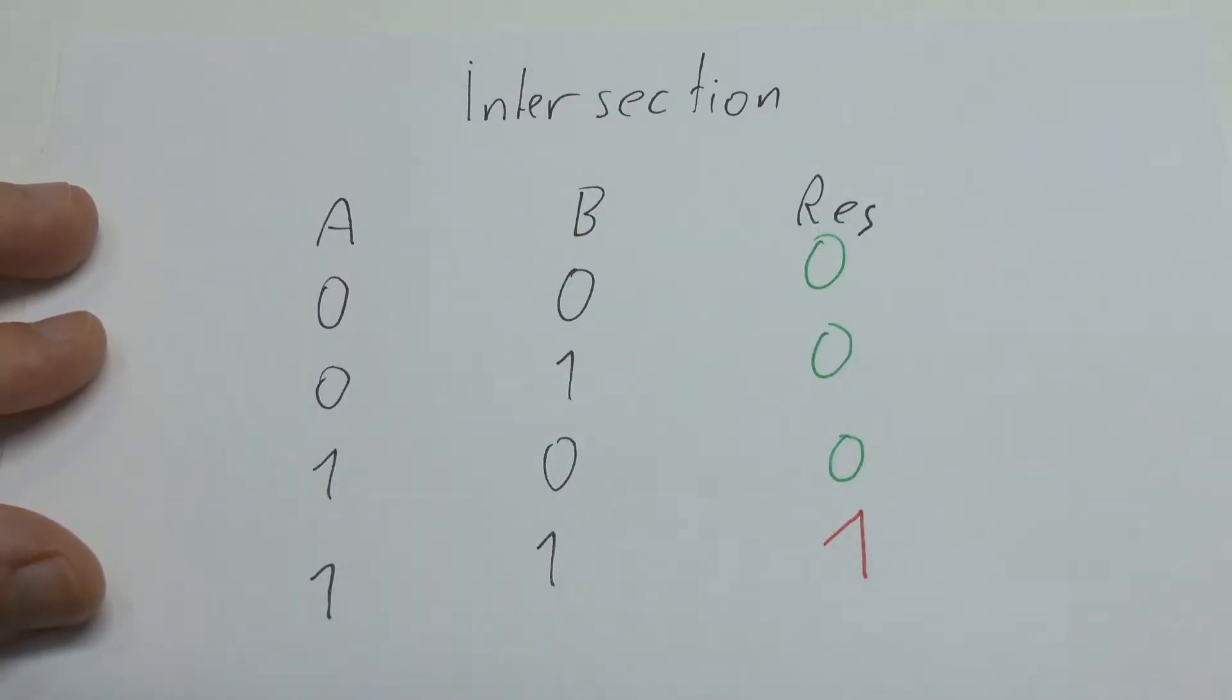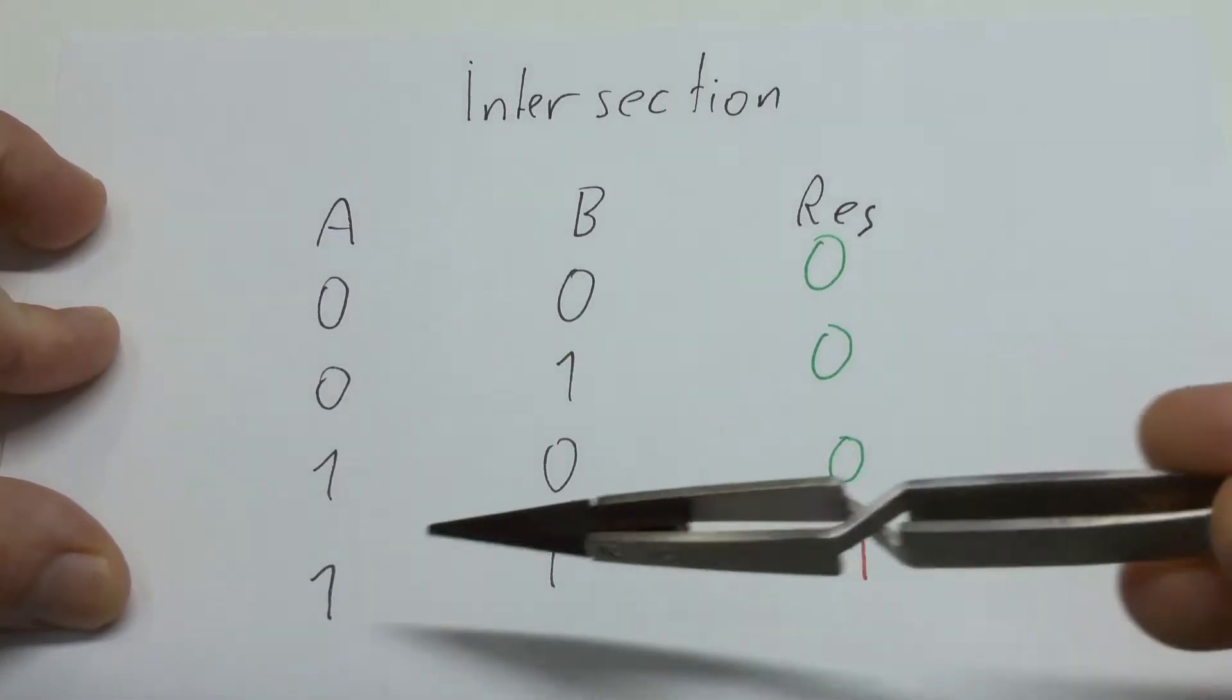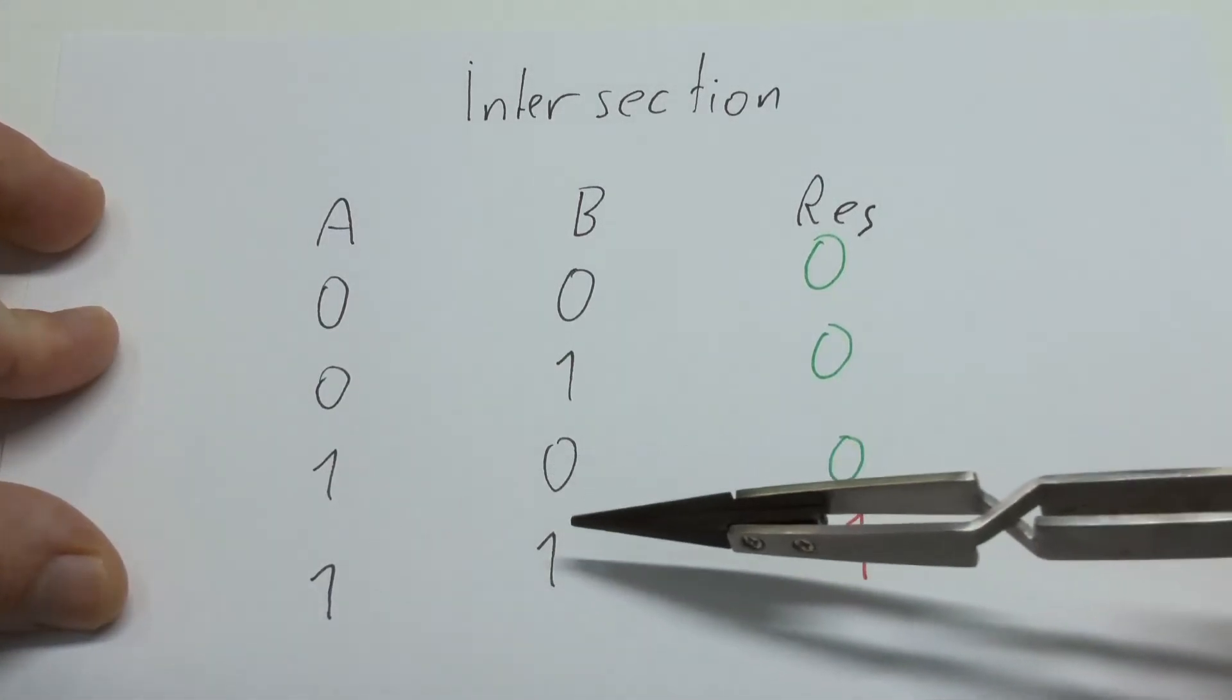And finally we get Intersection. Intersection gives us a 1 only if both A and B set the relevant point. And this obviously is exactly what we need.